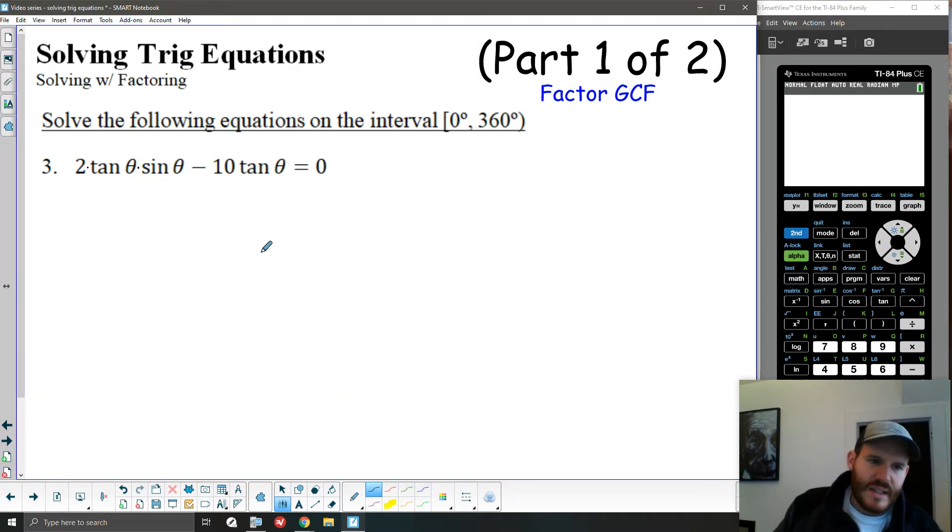We can treat this the same way we treated algebraic variables, thinking of tan theta as a value x and sine theta as a value y. When we have common terms across an expression, we can typically factor. In this case, we have a common factor of tan theta. So tan theta is like a variable in and of itself, and we can factor that term out. In fact, there's also a common 2 between the 2 and the 10. So I can factor a greatest common factor of 2 times tan of theta out of this expression.